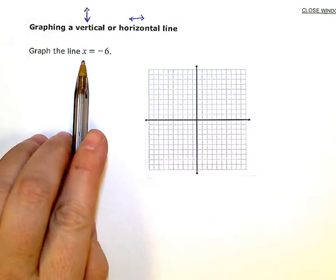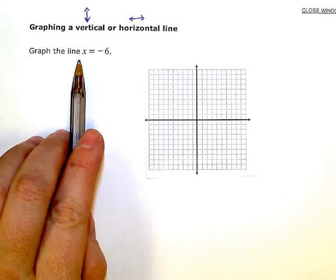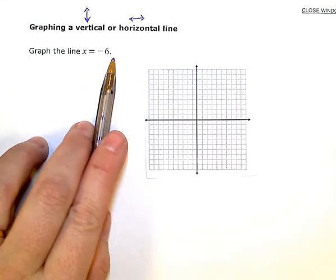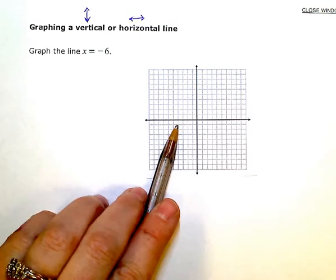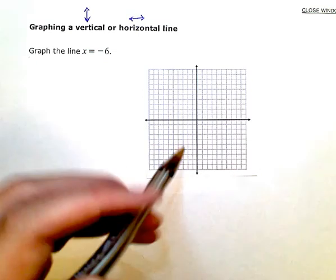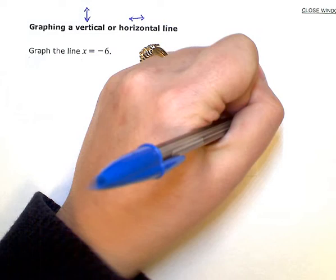Now, this is my x-intercept. x equals negative 6 is where the line is going to cross the x-axis. So this is my x-axis. This one is y.